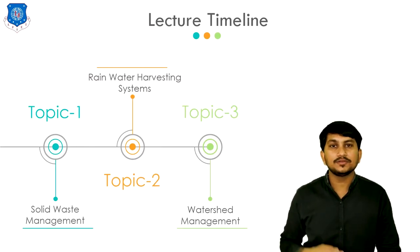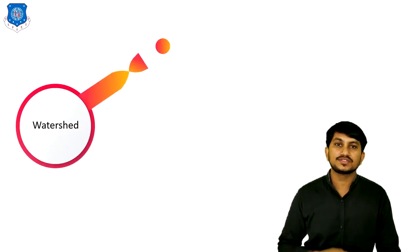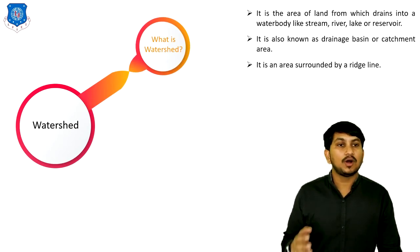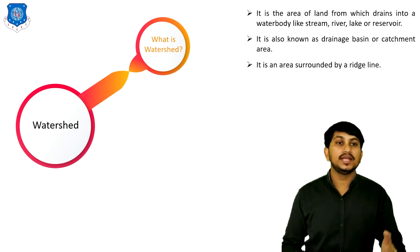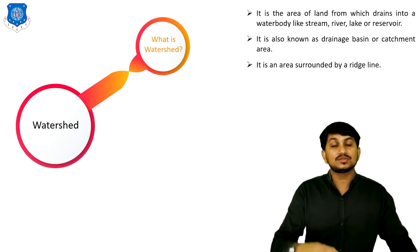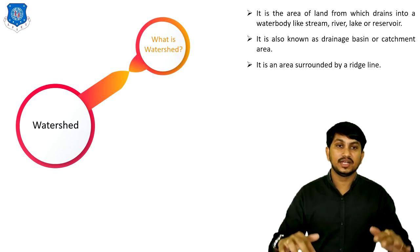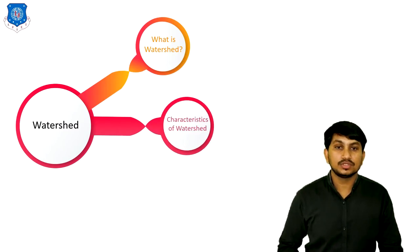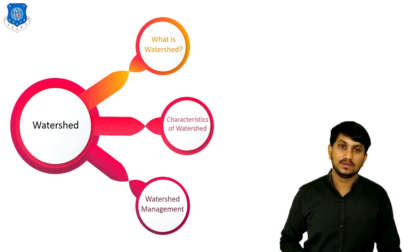Now let's move to the third topic in today's lecture, which is Watershed Management. To understand this topic, first you have to understand what a watershed is. It is the area of land from which water drains into water bodies like streams, rivers, lakes or reservoirs. It is also known as a drainage basin or catchment area. It is an area surrounded by raised land.